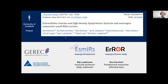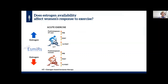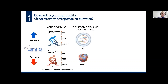Thank you, Eija. Our study question was: does estrogen availability affect women's response to exercise? To study this, we needed two groups of women who differed in estrogen status. We had 14 postmenopausal women — seven used estrogen-based hormonal therapy and seven were non-users. To study the effect of estrogen status and acute exercise on systemic signaling, these women did a maximal test on a cycle ergometer. We harvested plasma samples before, immediately after, and one hour after exercise. From the plasma, we isolated EVs and HDL particles via gradient ultracentrifugation followed by SEC.